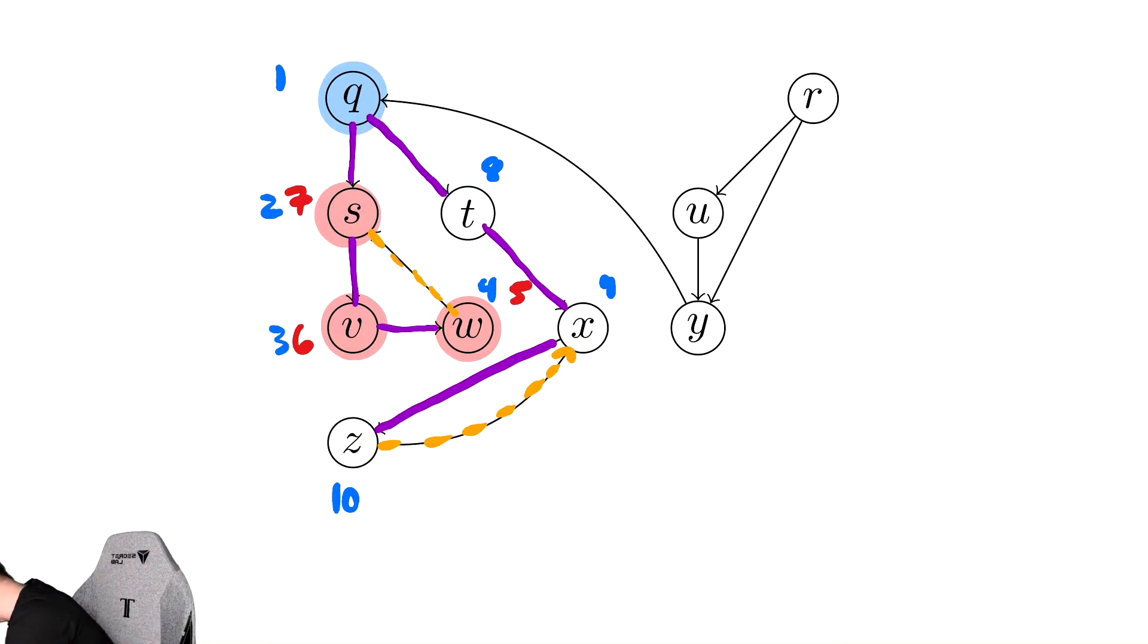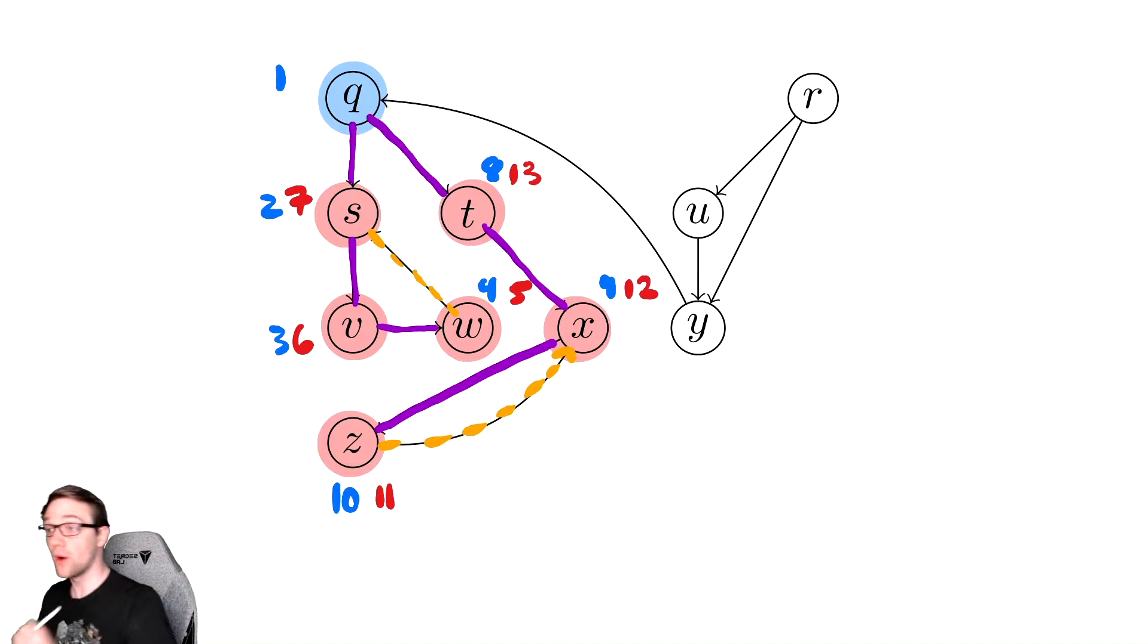...again backtrack all the way up. So we go all the way back up to q because there are no other edges from any of these vertices. So we finish z, we finish x, we finish t, and then we go up to q. And there's nowhere to go from q - there's an edge pointing into it but nowhere to go from it, so we are then done with q.